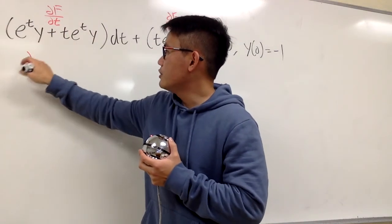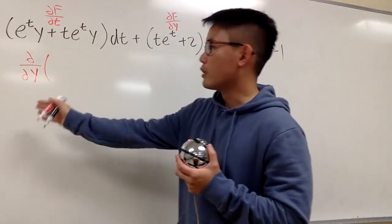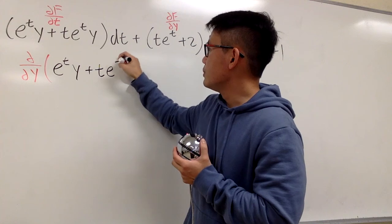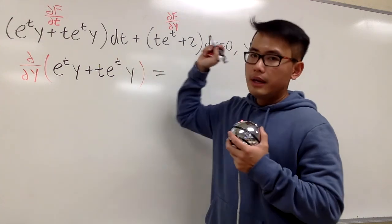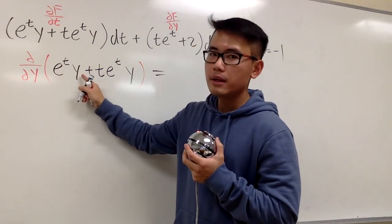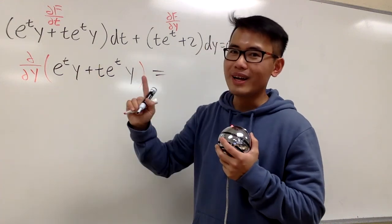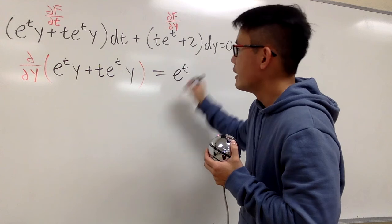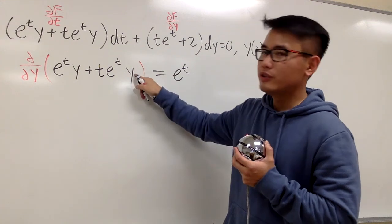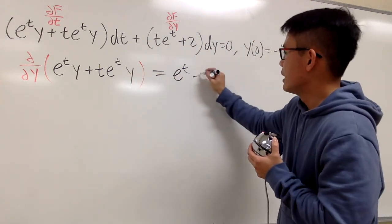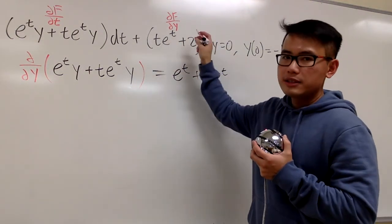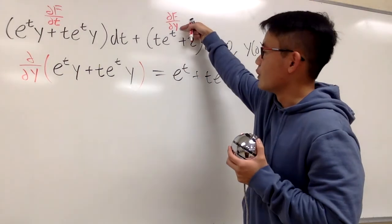Here I will differentiate the first expression with respect to Y. We have e to the T times Y plus T e to the T times Y. In this case, Y is the variable and T is the constant. When we differentiate e to the T times Y, the derivative of Y is just 1, so we just have e to the T. For the second term, it's just Y to the first power, so differentiating gives 1, and we get plus T e to the T.